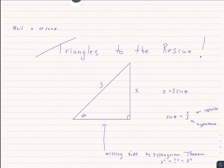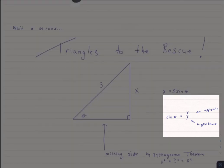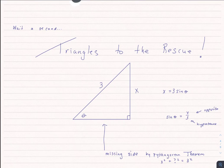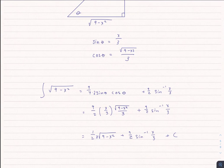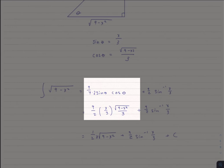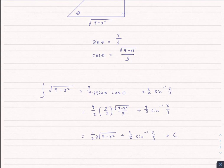If I know that x equals 3 sine theta, I can solve for sine theta and get x over 3. Sine is opposite over hypotenuse. Drawing that triangle, I have x and 3, with a missing side. Using the Pythagorean formula, a squared plus b squared equals c squared, that missing side is the square root of 9 minus x squared. So cosine of theta is adjacent over hypotenuse: square root of 9 minus x squared, divided by 3. Plugging in x over 3 for sine theta and that expression for cosine theta, plus arc sine of x over 3 for theta itself, and not forgetting the plus C.